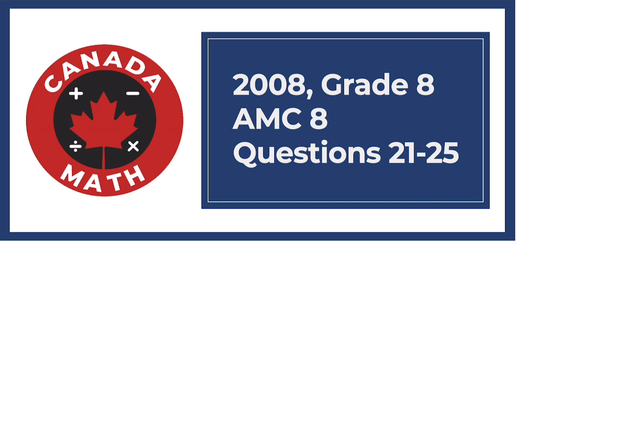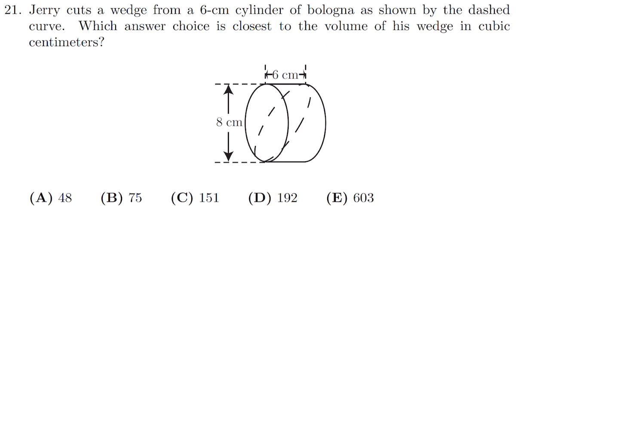Questions 21 through 25 on the 2008 grade 8 AMC 8. Jerry cuts a wedge from a 6 centimeter cylinder of bologna as shown by the dashed curve, which answer choice is closest to the volume of his wedge in cubic centimeters.